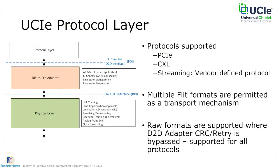Raw formats are where the die-to-die adapter data path is bypassed — the protocol layer takes care of link reliability, CRC, FEC, or whatever is required. This is useful for retimers trying to get through a die-to-die link to an off-package interconnect, where the protocol layer might need stronger CRC and FEC. It's also useful for cases where you want to send a raw set of wires across, such as disaggregating a die and splitting an internal fabric. There is no FLIT format associated with the raw format — it's entirely up to the protocol layer to define.